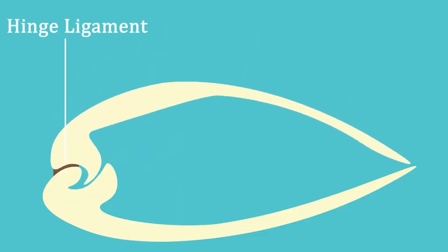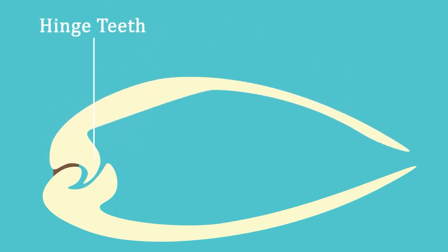Bivalve shells are hinged together by a horny ligament. This ligament stretches as the shells open and compresses as they close. This ligament can often be accompanied by a set of interlocking teeth called hinged teeth that create a stronger joint for these shells to pivot on. There are two types of these hinged teeth: cardinal and lateral hinged teeth. Cardinal teeth are more central to the bivalve shell, while lateral teeth are lateral or on the sides.